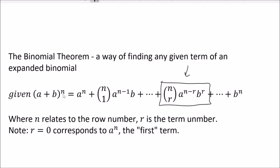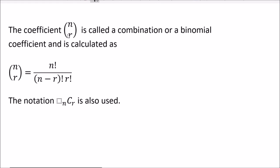We call this n choose r — as in n select r — and it comes from combinatorics, so it's sometimes called a combination or a binomial coefficient. It's calculated using factorials, which is the biggest reason we did factorials in prior lessons. Most simple calculators have an nCr button. Also important: this notation with numbers stacked vertically is not a fraction — there's no fraction bar. That's very different from a formula that does have a fraction bar, so we have to be intentional about that distinction.